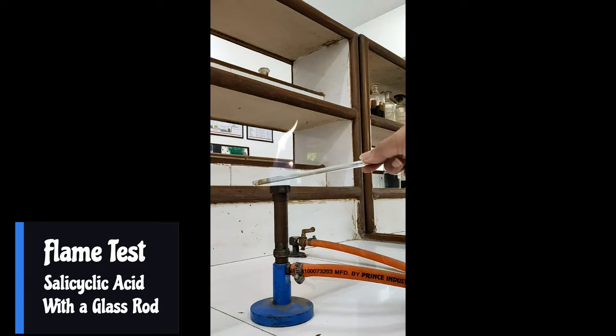Take the compound on a glass rod and observe how it reacts with the flame. It gets burnt - observe whether it produces a white flame or a black flame.